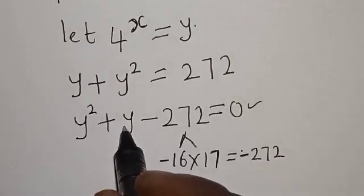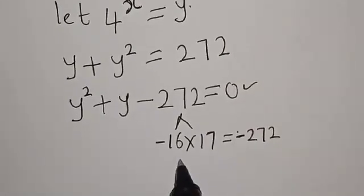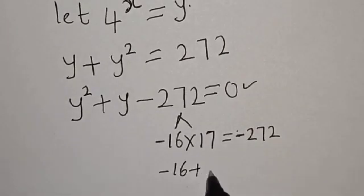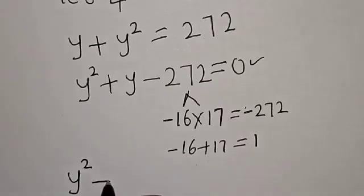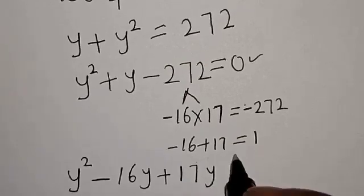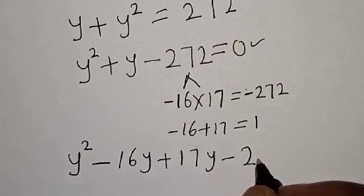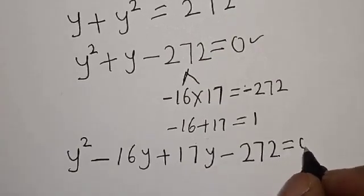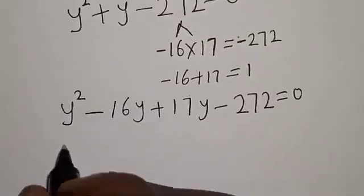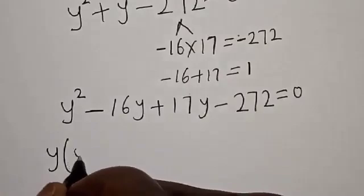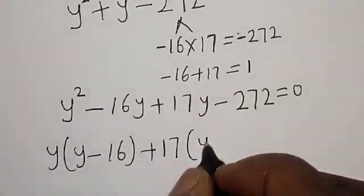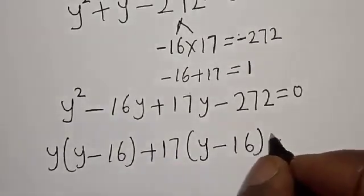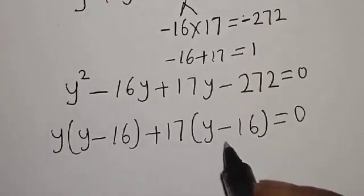The product is negative 272 and the coefficient of y is 1, which is the sum. If we use minus 16 plus 17, this gives 1. So we have y squared minus 16y plus 17y minus 272 is equal to zero. Then we have y times y minus 16, plus 17 times y minus 16, is equal to zero.